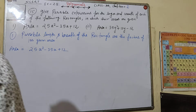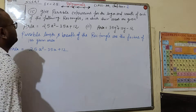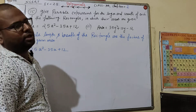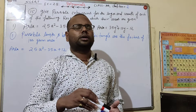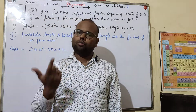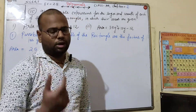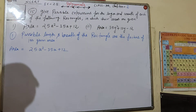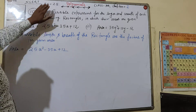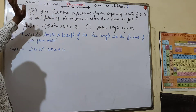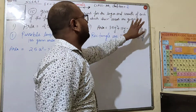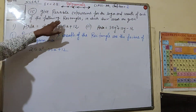I am going to do a question here. This is exercise 2.5, the 15th question from NCERT Class 9 Chapter 2. Please read the NCERT text and read the question. The question says: given possible expressions for the length and breadth of each of the following rectangles.